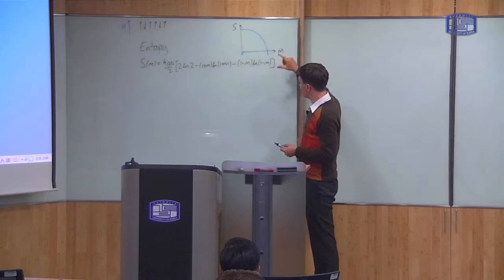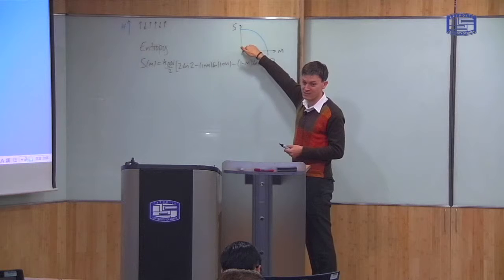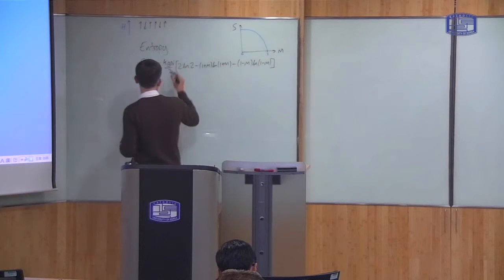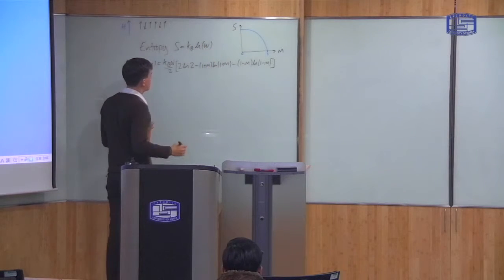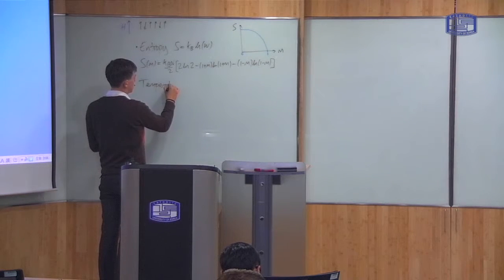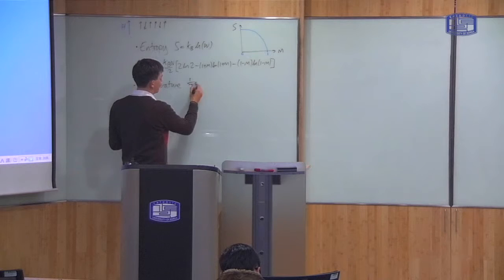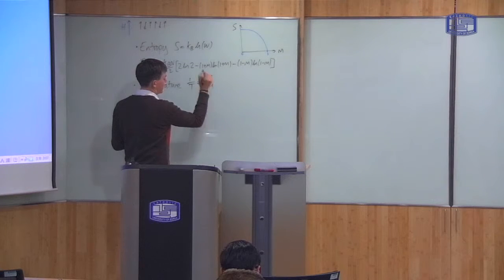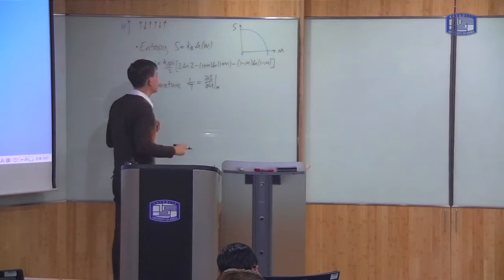In terms of energy, magnetization equals 1 is a low energy state, and the opposite direction — toward negative magnetization — is high energy. We also calculated the temperature. In statistical physics, 1/T is equal to the derivative of entropy with respect to energy, when you do no work — in this case, at constant field.